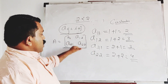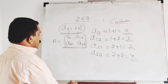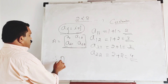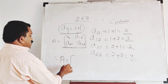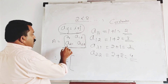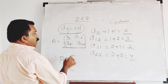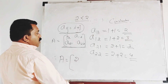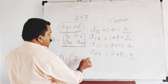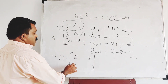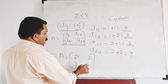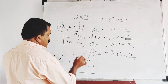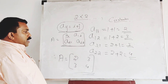Therefore, the required matrix A is equal to: first element 2, 3, and last element — construction complete.